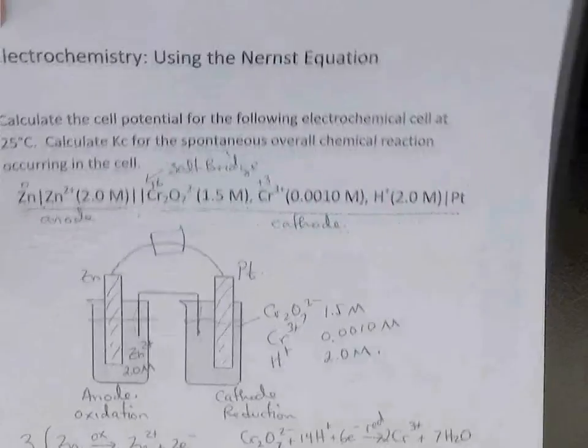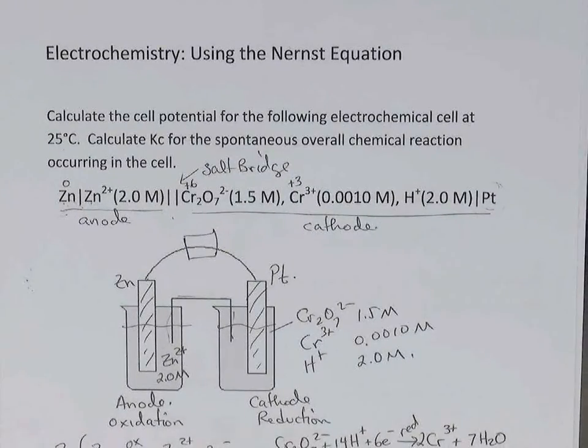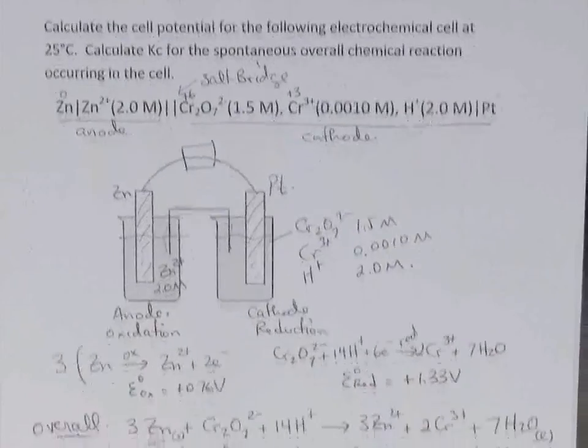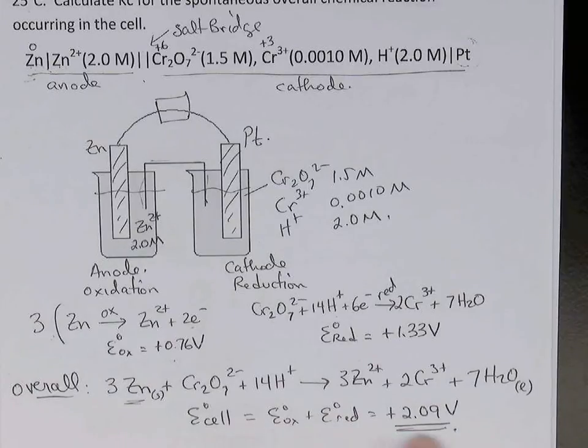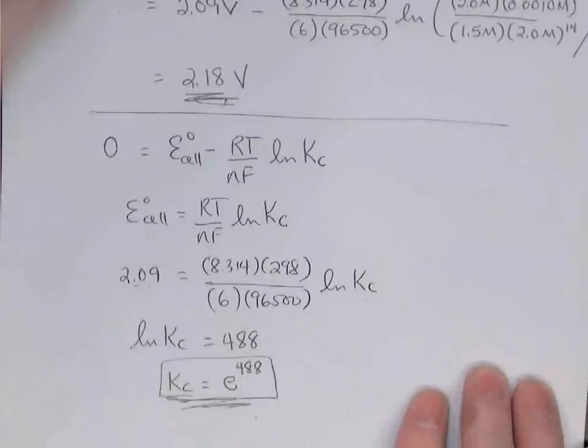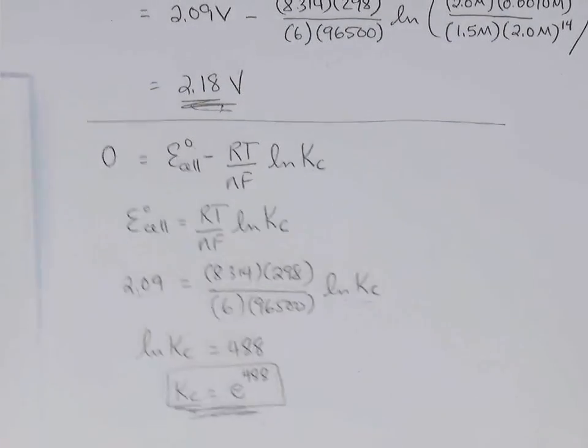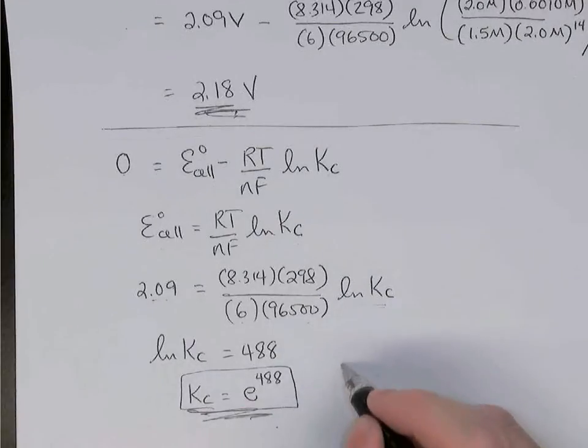So we used the Nernst equation here in two ways. We calculated the cell potential for non-standard cell conditions when the concentrations were not 1 molar. And then we used the Nernst equation also to find the equilibrium constant for a redox reaction. Notice that when the redox reaction has a positive cell potential, standard cell potential positive, the value for Kc ends up being very large. A positive cell potential means that this reaction was spontaneous, and that simply means that Kc is large.